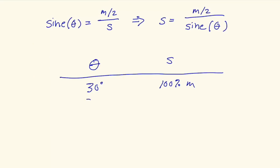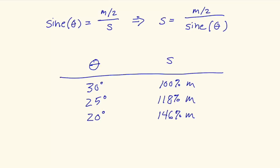If you decrease that angle to 25 degrees and plug in sine of 25, you come up with a value that's 118 percent of your weight. Use 20 degrees and it's 146 percent of your weight. If you use 14.5 degrees, then it's twice your weight.